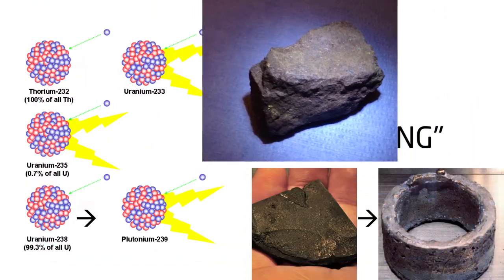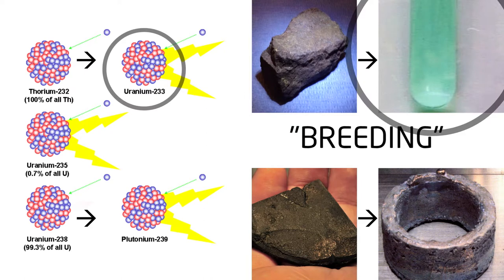And then there was thorium, and in a similar manner to uranium-238, it also had to be transformed into another nuclear fuel, uranium-233, before it could be used in a reactor.